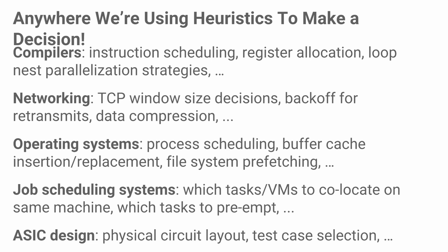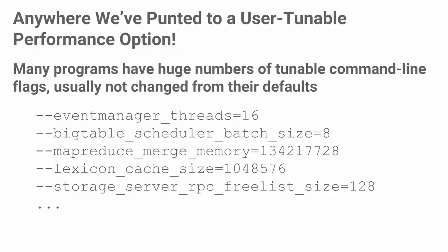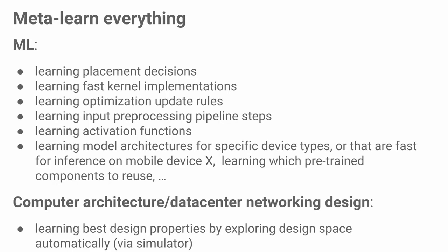Anywhere we're using heuristics to make a decision is a ripe opportunity for machine learning in an online manner. Think about compilers: instruction scheduling, register allocation, loop nest parallelization strategies. Networking has all kinds of decisions about when to back off, when to increase or decrease window size. Operating systems have buffer caches, file system prefetching, and many more. ASIC design and physical circuit layout are interesting areas, as is test case selection for chip testing. Anywhere we've punted to a user-tunable performance option—like the hundreds of thousands of flags across the Google codebase for things like how many event manager threads to have, or what batch size to use in a scheduler—those are all opportunities.